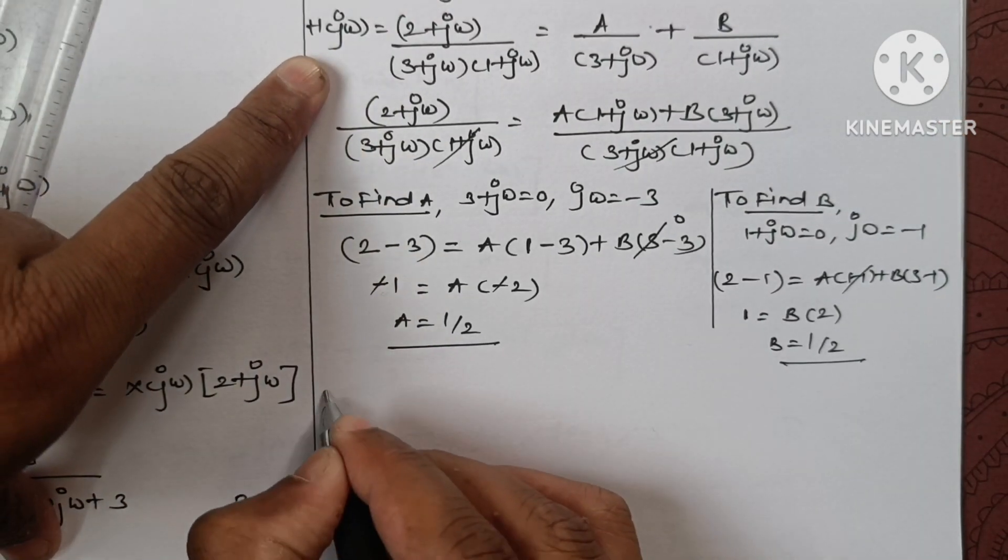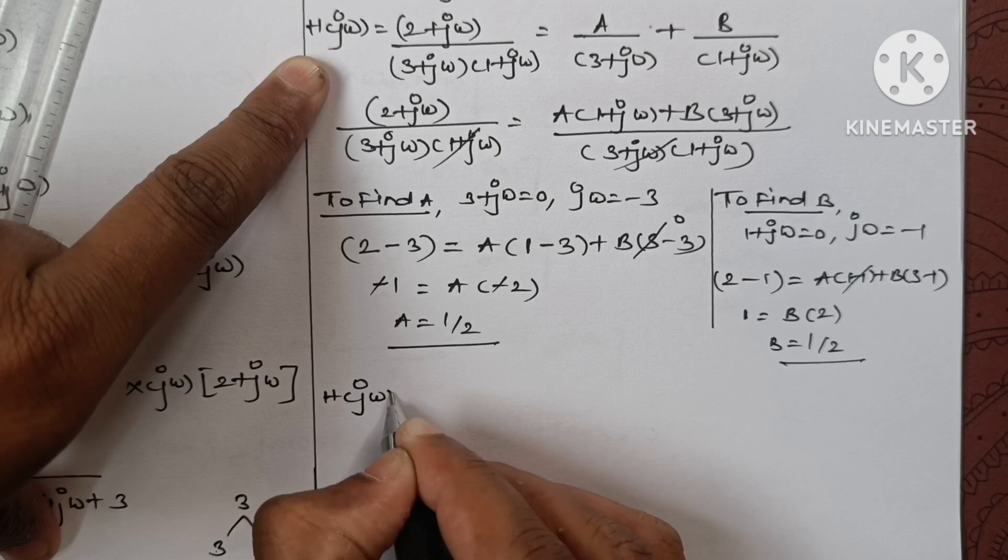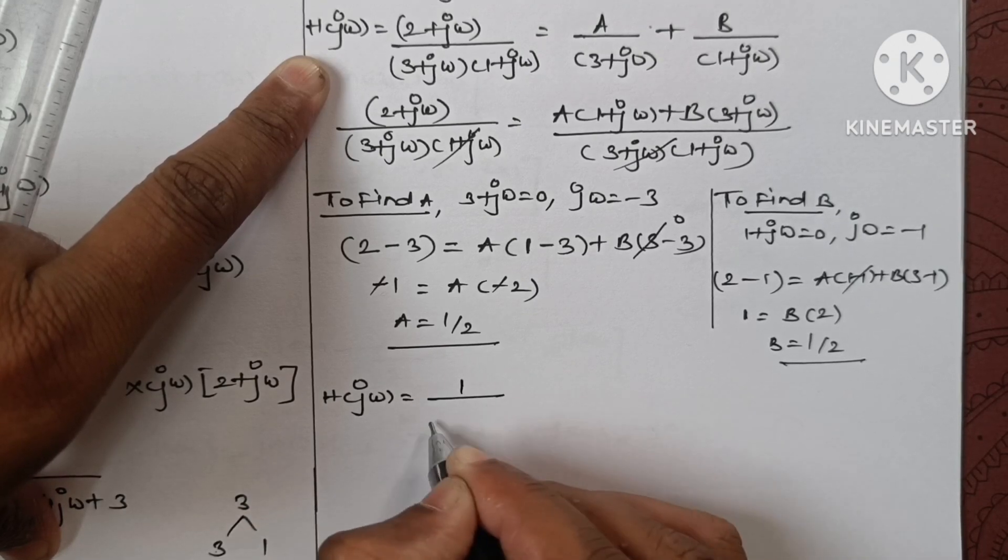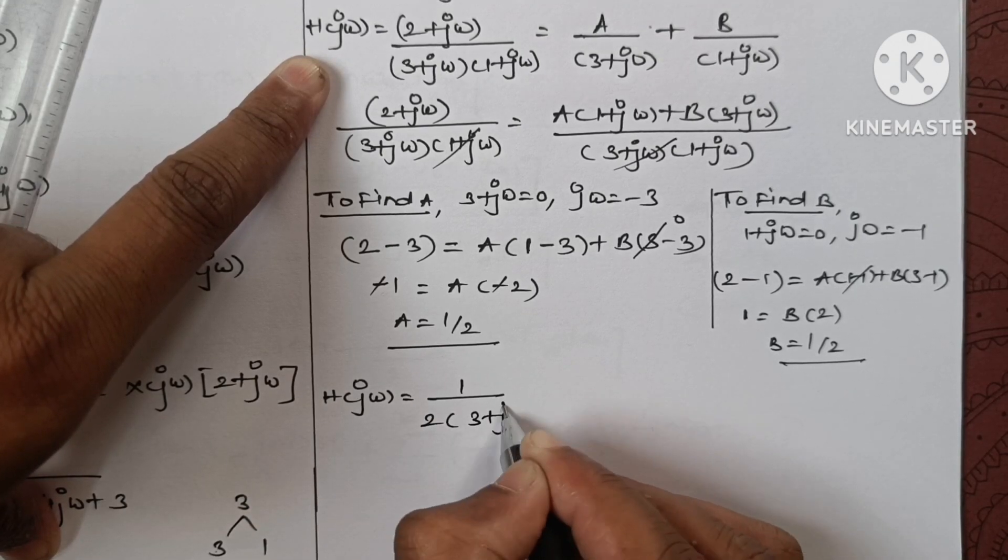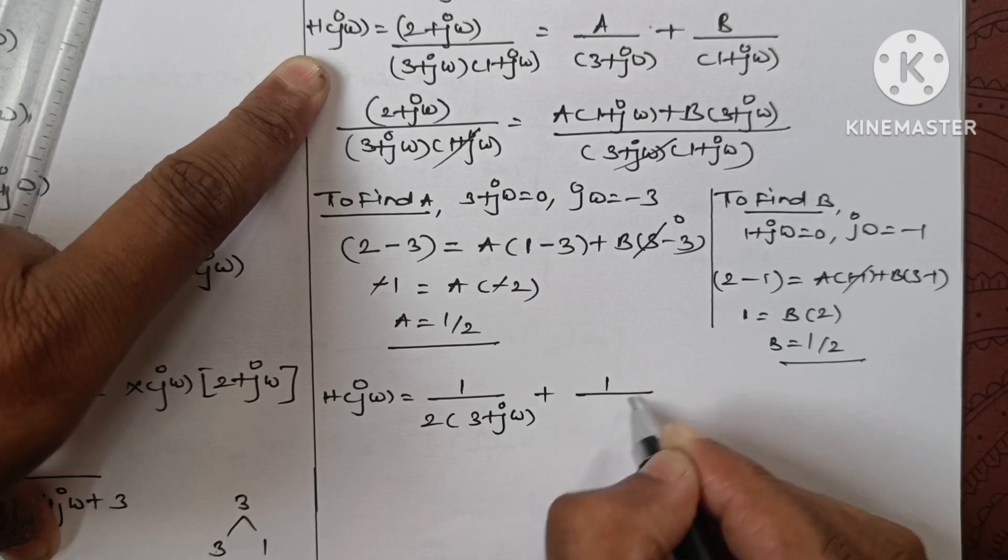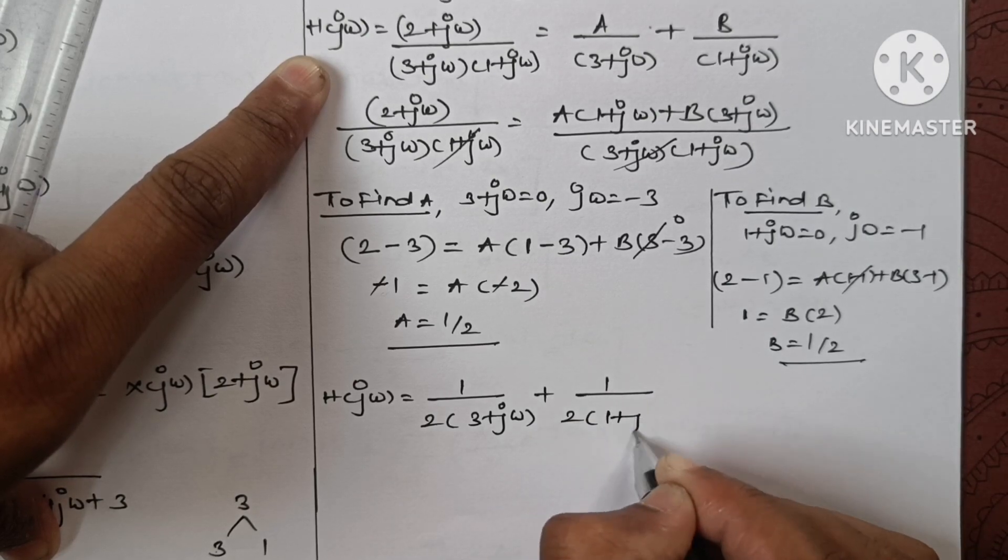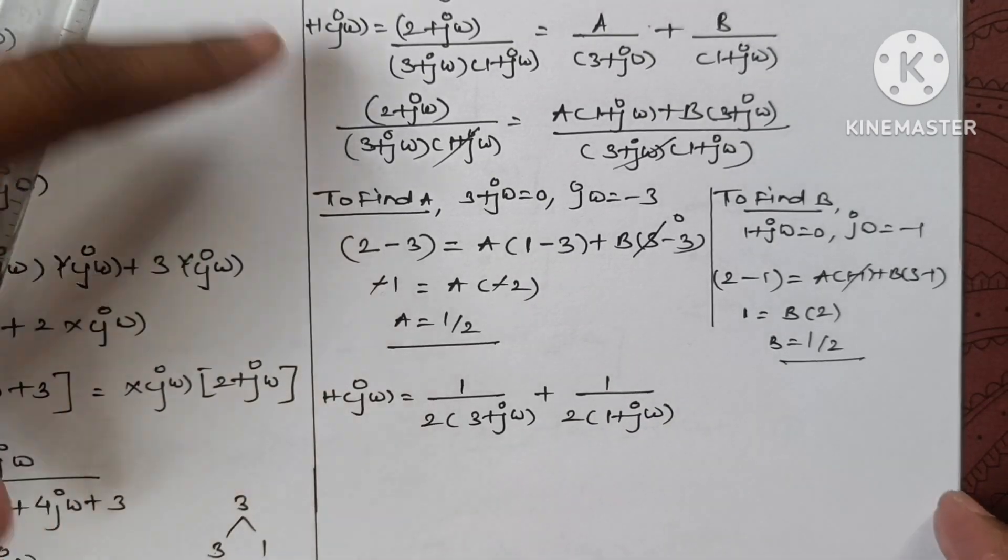Let's put these in the equation. h(jω) will be 1/2 × 1/(3 + jω) + 1/2 × 1/(1 + jω).